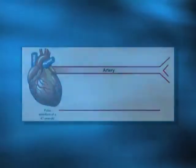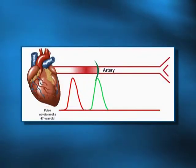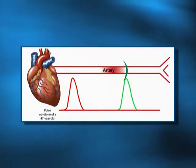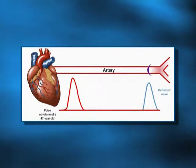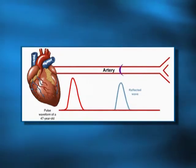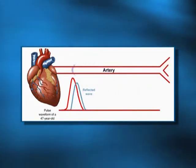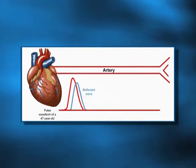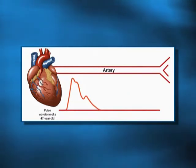But when you are about 40 years old, the vessels get a little bit stiff. When the heart pumps, the wave travels a little too fast. It comes back a little too fast and actually enters into the systole. So what you get is an extra load — an extra wave — that the heart has to fight against. You are fighting your oncoming wave.